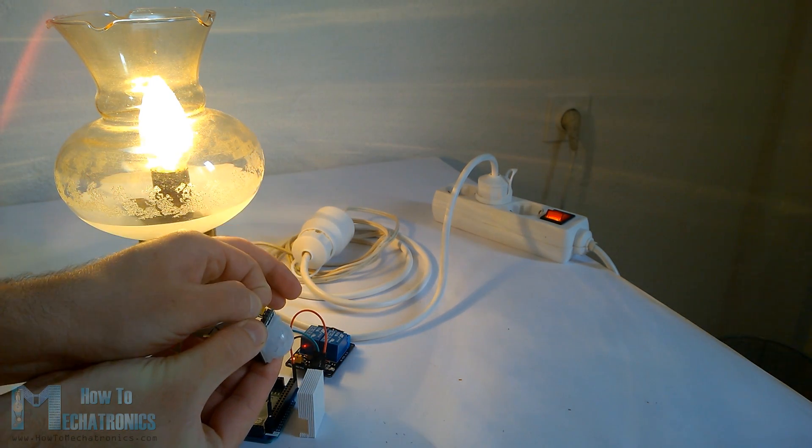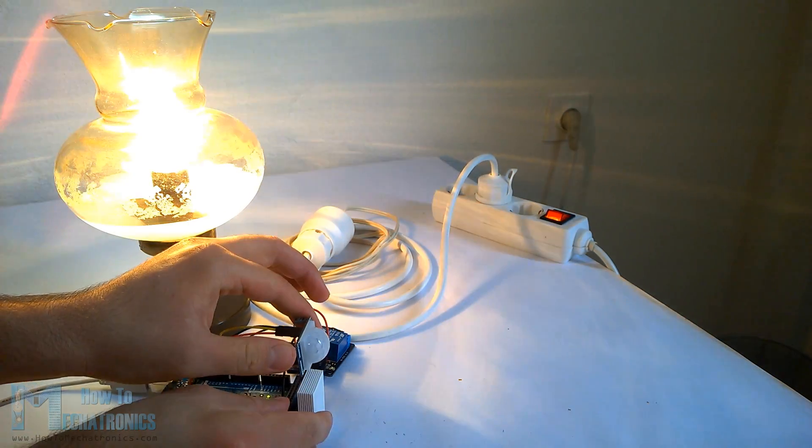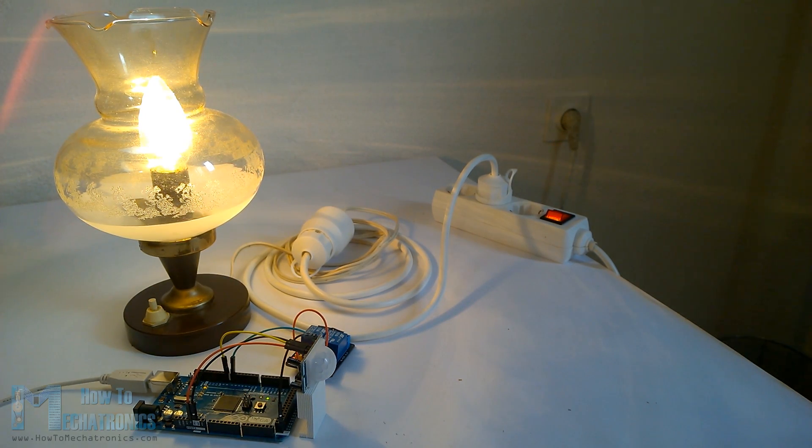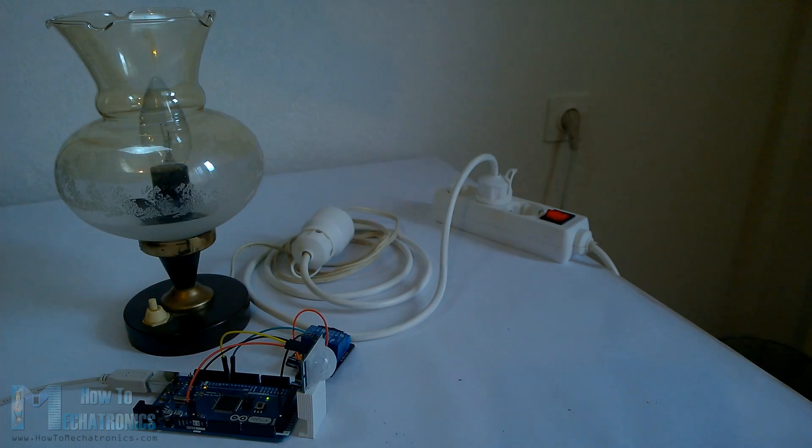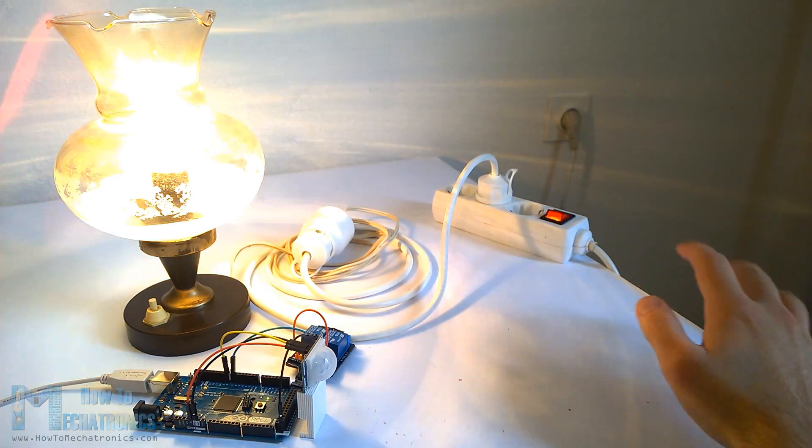If I change the sensor with the jumper to the repeatable trigger mode and I constantly move the hand, the lamp will be constantly on as well and it will turn off after the movement is gone and the set delay time is over.